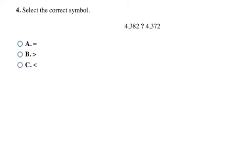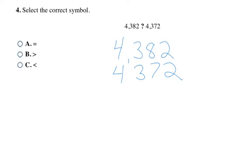Now instead of getting answers in words, I just give the answer as the symbol, so you have to match it correctly. Continuing the same process, I look for numbers that are different in the columns. I have two 4s, then two 3s, and then in the next column an 8 and a 7 — those are different. Eight is bigger, so 4382 is the bigger number. Drawing the symbol eating the bigger number, that first number is greater than the second, making B my final answer.